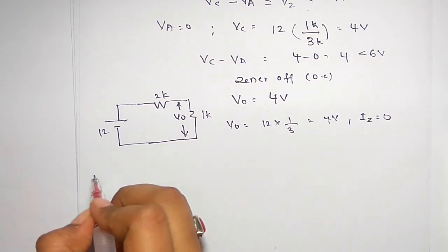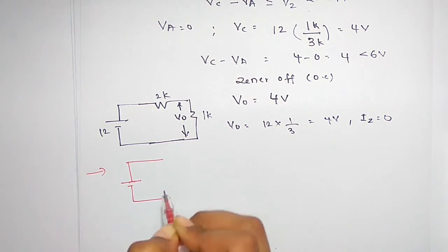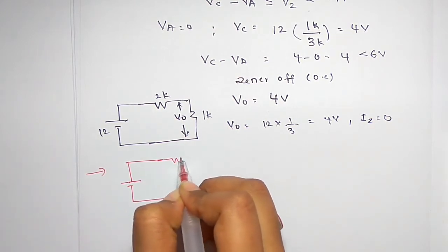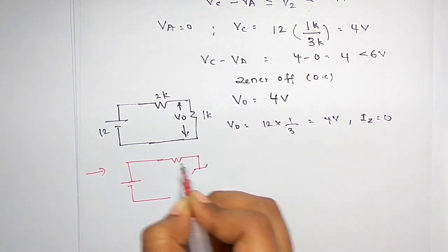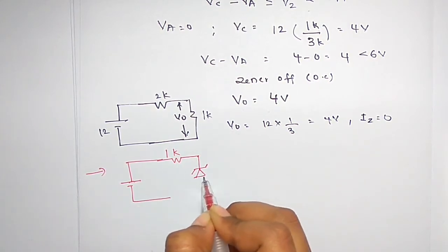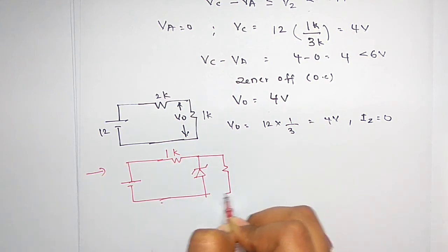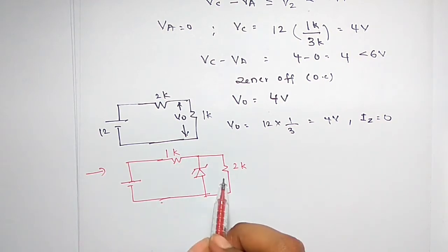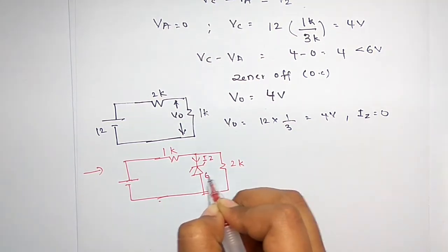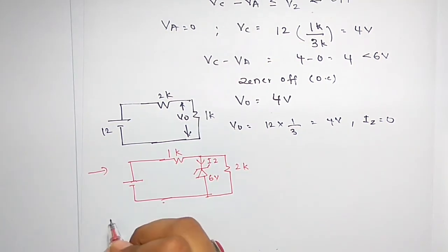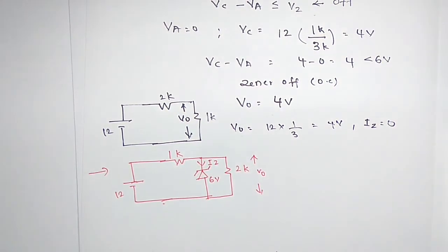Let's do another problem. For the same previous circuit, I am just interchanging the positions of the resistances — placing the 1 kilo ohm in series and the 2 kilo ohms as the load. In the previous case it was 2 kilo ohms in series and 1 kilo ohm as load. Again, IZ and Vz is 6 volts, input is 12 volts. Find V0 and IZ.